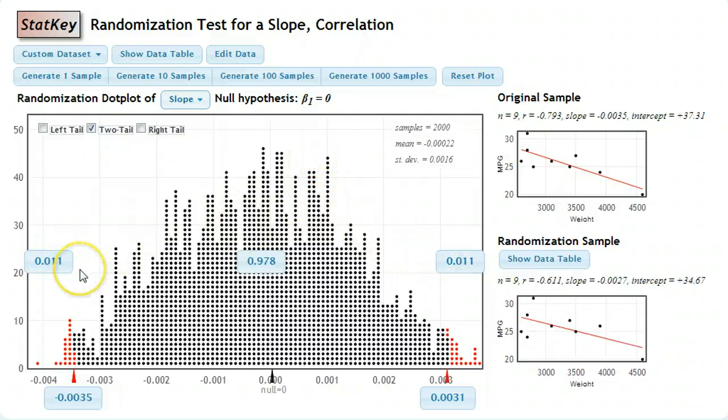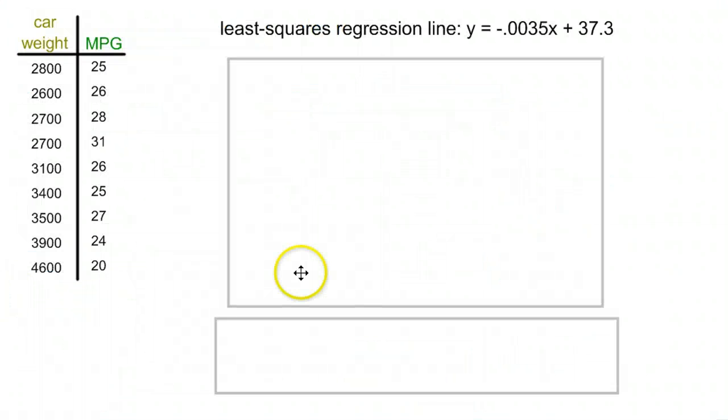And that value is so small that we would decide to reject. We would reject the null and say, no, we have a significant slope. Our slope is statistically significant.